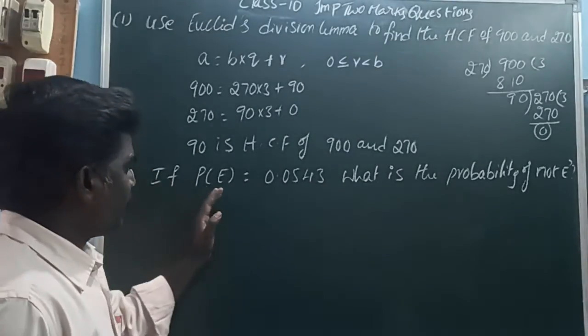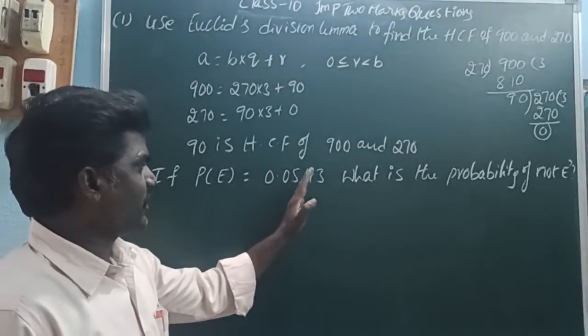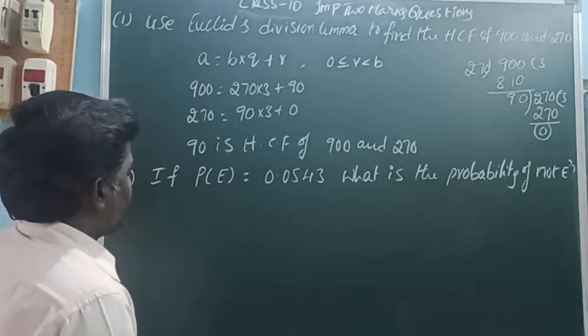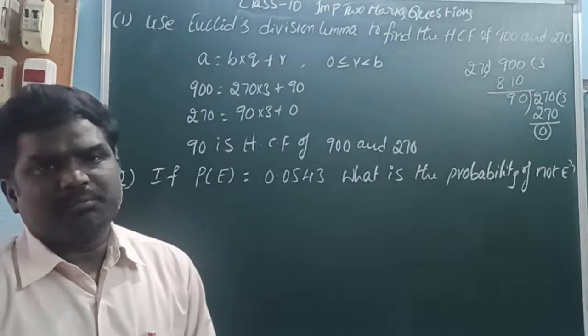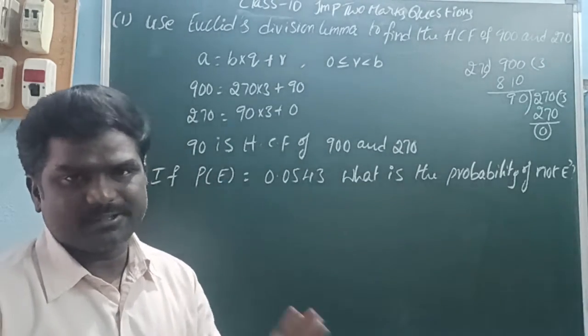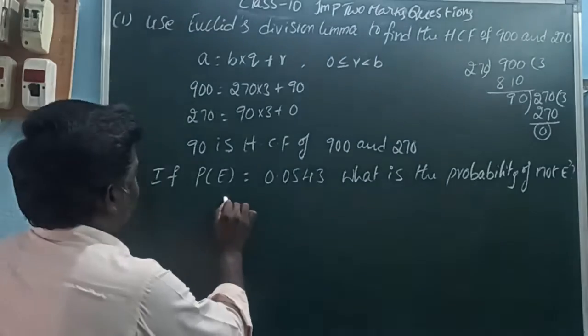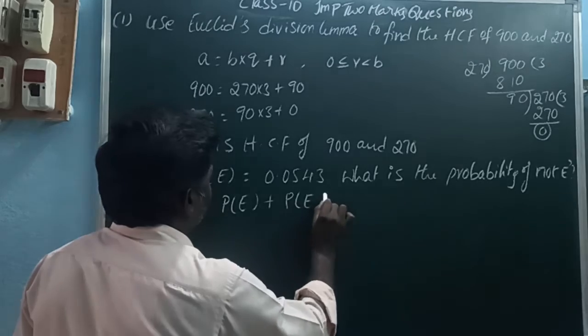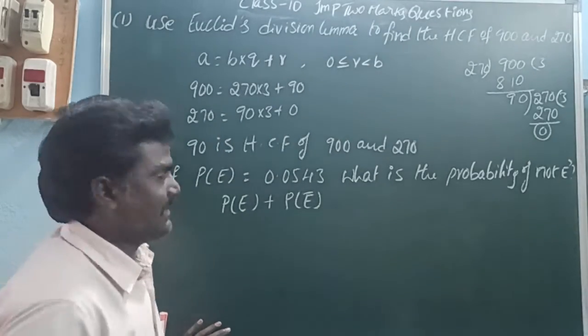Next problem: If P(E) = 0.0543, what is the probability of not E? We know that the sum of all probabilities of events in an experiment is 1. So P(E) + P(E̅) = 1, where E̅ means not E.